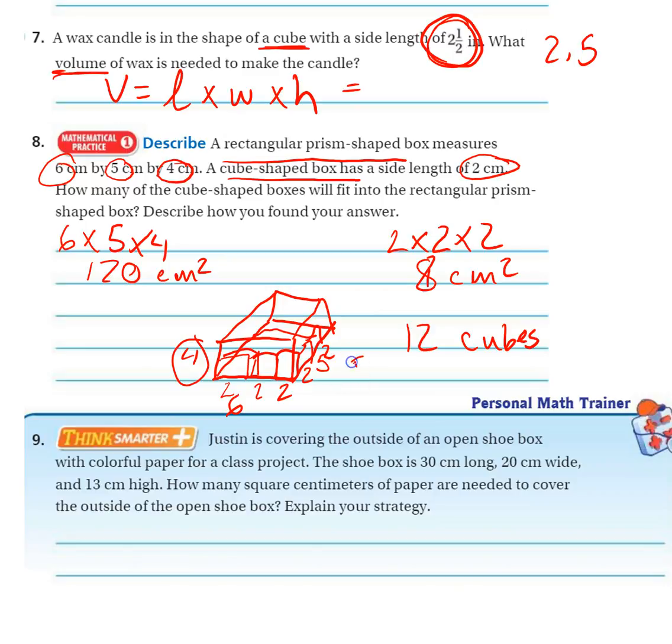And then I drew a picture to find my answer. So it looks to me like we can get 12 cubes, but there would be some space back here, so the box wouldn't be completely filled. Okay, number 9,